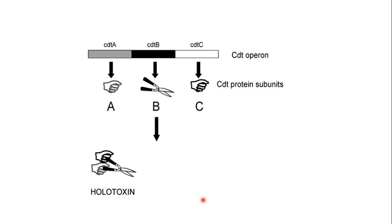The CDT operon has three genes: CDTA, CDTB, and CDTC. CDTA and CDTC are responsible for binding to epithelial cells, as shown by the diagram — these two proteins, C and A, bind to the epithelial cells. CDTB has the DNA degradation potential and is therefore responsible for degrading the DNA. The scissor symbol in the diagram indicates the DNase activity of CDTB in the CDT operon.